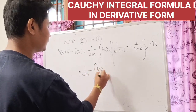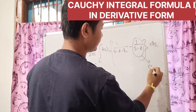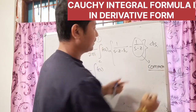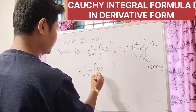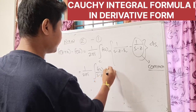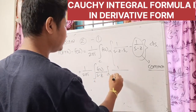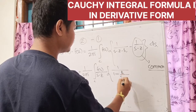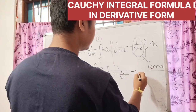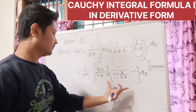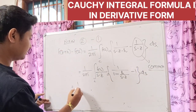So here, taking 1 over (s minus z) as common inside the integral, we get 1 by 2πi times integration over closed contour C of f(s) divided by (s minus z), times 1 over (1 minus h divided by (s minus z)), minus 1, into ds. Further simplifying this expression.